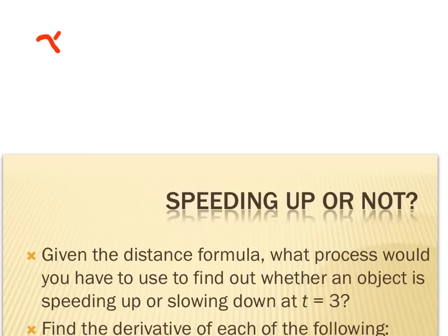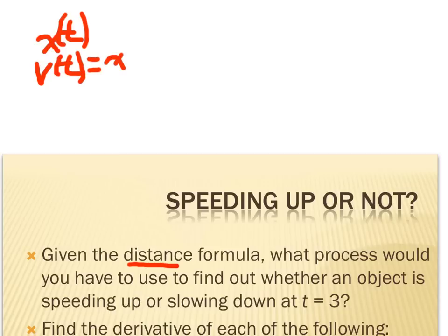Given the distance equation — I'm going to call it x of t, which is not an uncommon notation; sometimes they use y of t or d of t — make sure you realize it's a distance formula or position equation. I need to find the relationship between velocity and acceleration, so I need the velocity, which is the derivative of the distance equation. Even though they didn't give it to me, I can find it by deriving the distance equation.